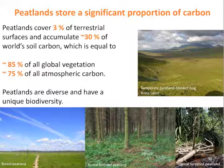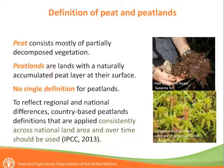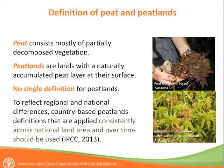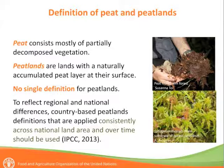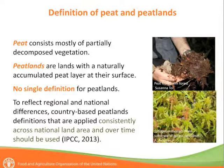Overall, there are no consistent or universal definitions of peatlands across the globe. As a general definition, they can be defined as lands with a naturally accumulated peat layer at their surface. Peat consists mostly of partially decomposed vegetation. On the slide you can see an example of peat soil from an oil palm forest plantation in Southeast Asia, as well as sphagnum mosses, which are the main component of boreal peatlands.